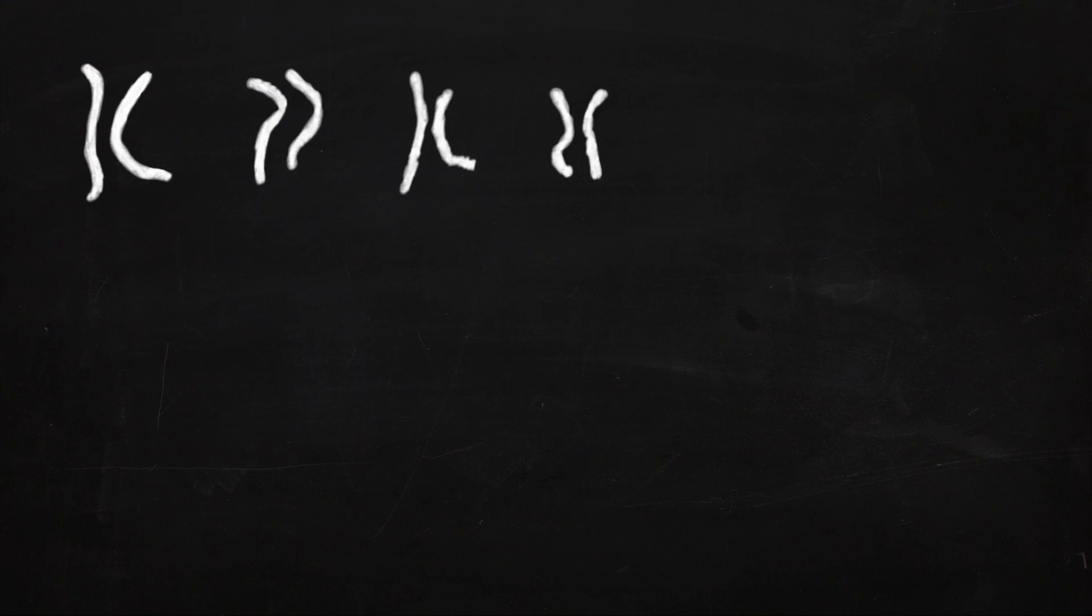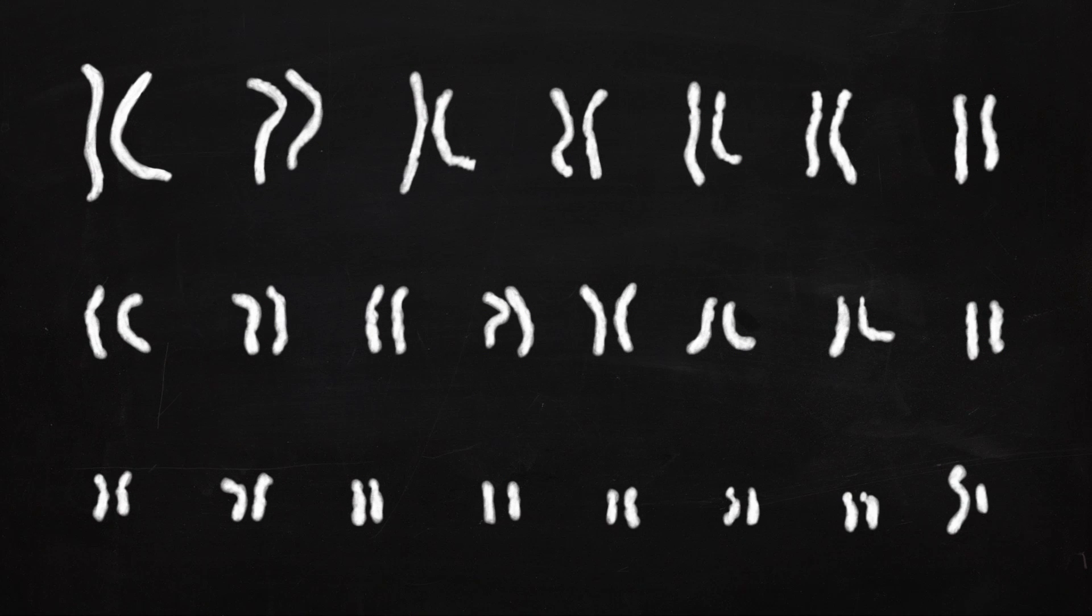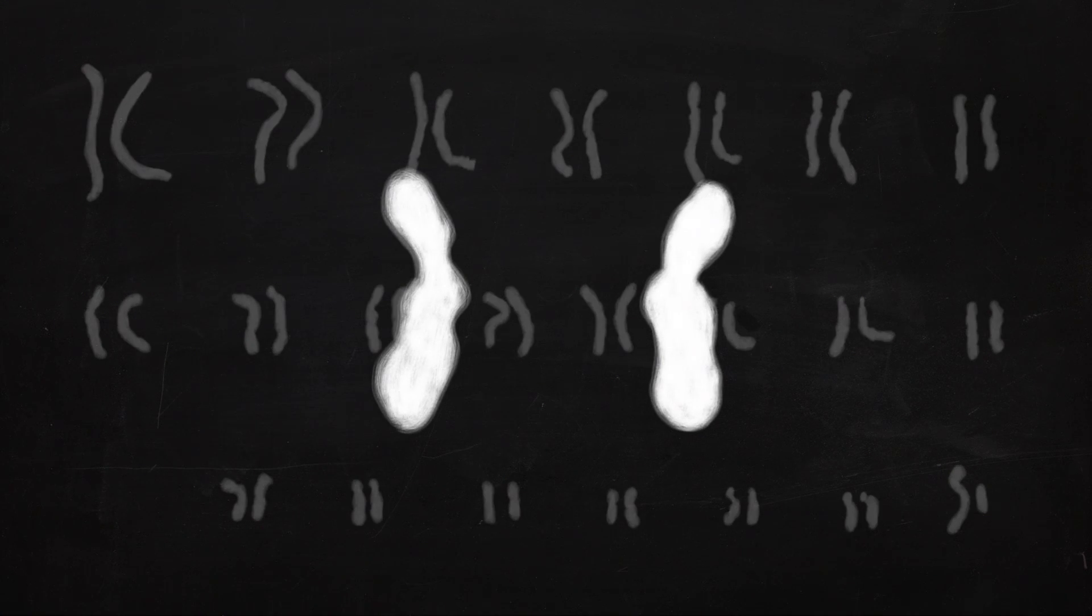DNA is coiled up into bunches called chromosomes. Humans have 23 pairs or 46 different chromosomes. Why do we call them pairs of chromosomes? It's because, for the most part, both chromosomes of a pair code for the same things and have the same genes on them.